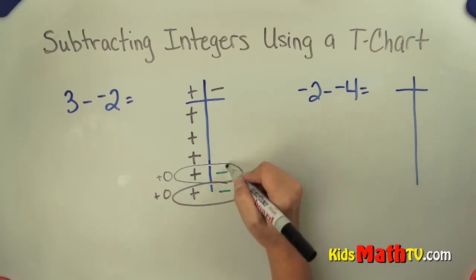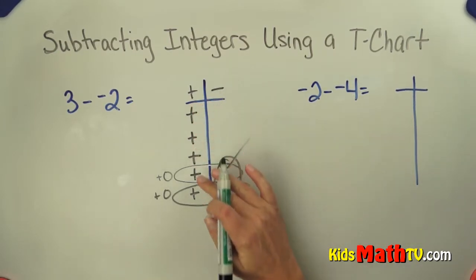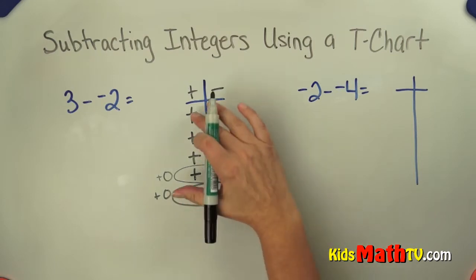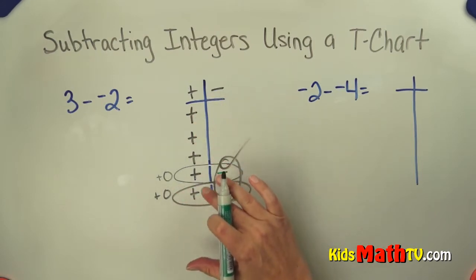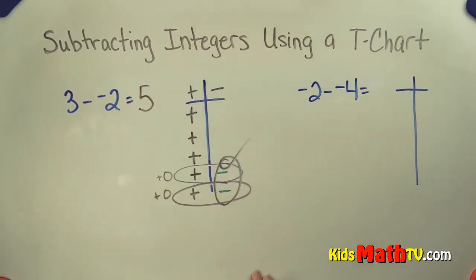I want to take away 2 negatives. I now have these 2 negatives I can take away. So I'm simply going to take them away, 2 negatives, and what is left over is my answer. I have 1, 2, 3, 4, 5 positives left over. So my answer is 5 positives.